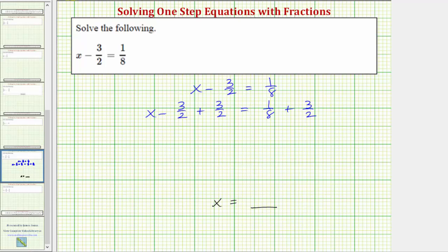Looking at the left side of the equation, the plus 3 halves undoes the minus 3 halves, or we could think of this as negative 3 halves plus 3 halves, which would be zero. So now on the left side we just have x equals on the right side.